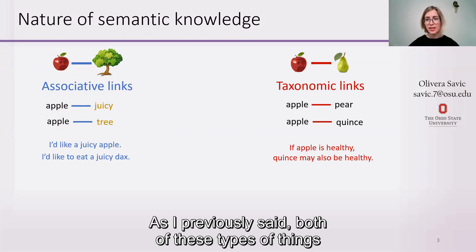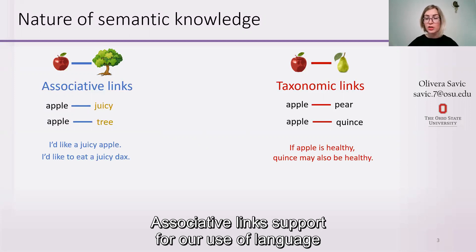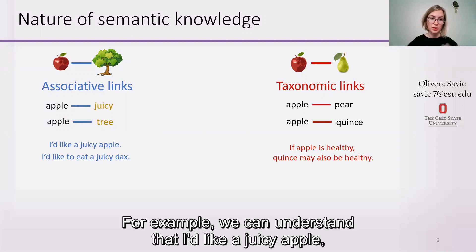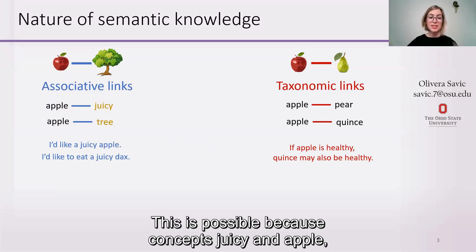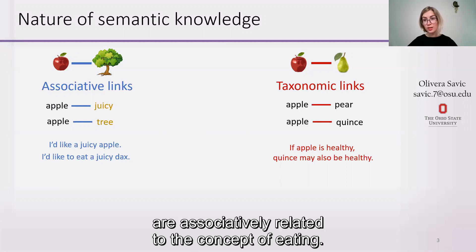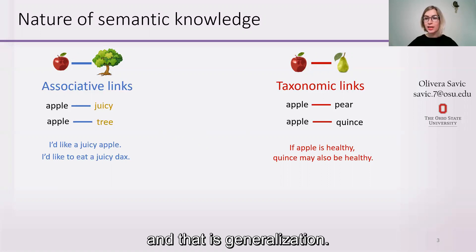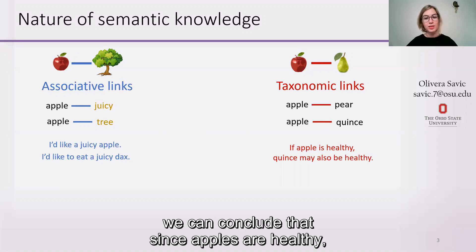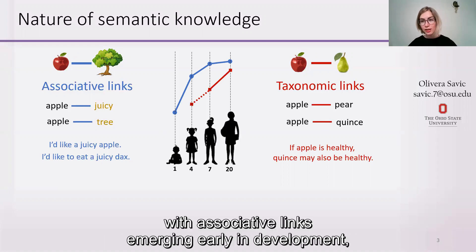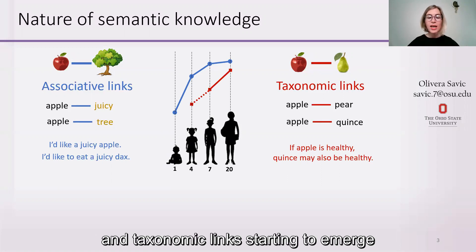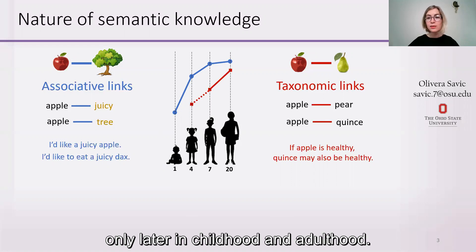Both of these types of links are critical for everyday functioning. Associative links support our use of language beyond comprehension of individual words. For example, we can understand that 'I'd like a juicy apple' communicates something about eating apples, although eating was never mentioned, because juicy and apple are associatively related to the concept of eating. On the other hand, taxonomic links support generalization: if apples are healthy, quince may also be healthy. These two types of links have different developmental trajectories, with associative links emerging early and taxonomic links starting to emerge between age four and six, becoming robust only later in childhood and adulthood.